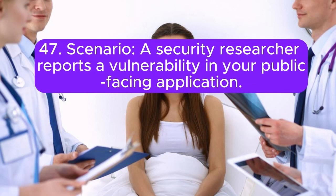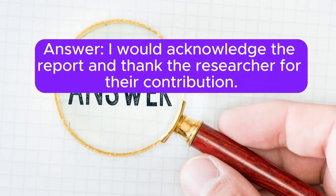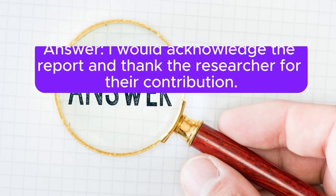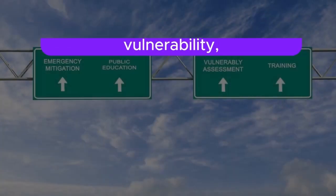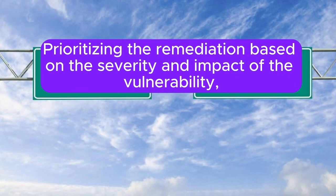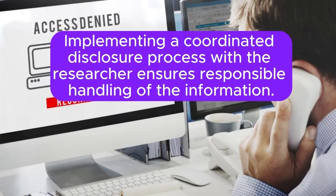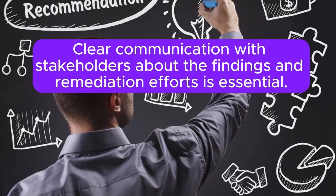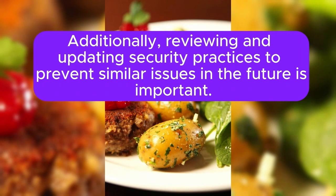Scenario 47: A security researcher reports a vulnerability in your public-facing application. How do you respond? I would acknowledge the report and thank the researcher for their contribution. I would verify the vulnerability by conducting an assessment and replicating the issue, then prioritize the remediation based on the severity and impact of the vulnerability and work with the development team to apply a fix. Implementing a coordinated disclosure process with the researcher ensures responsible handling of the information. Clear communication with stakeholders about the findings and remediation efforts is essential. Additionally, reviewing and updating security practices to prevent similar issues in the future is important.